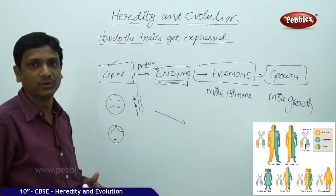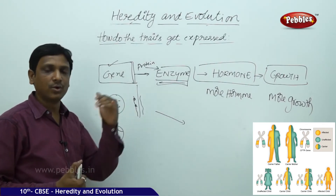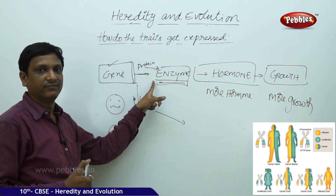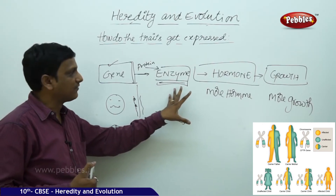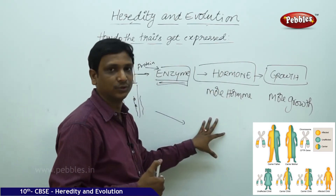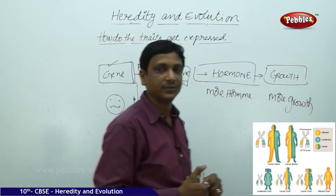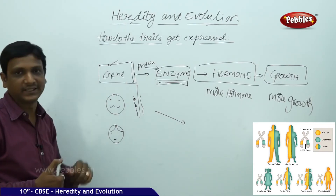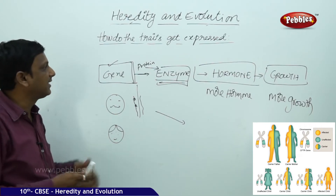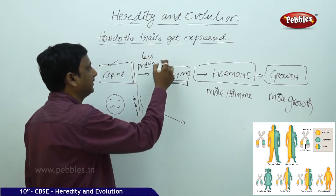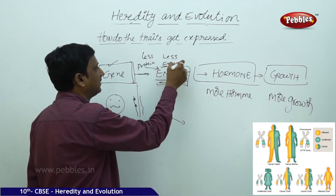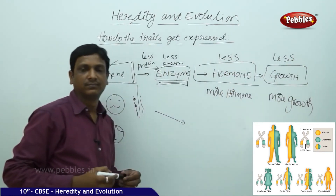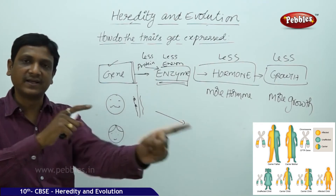Some boys grow to 6 feet, 6.2, or 6.4. Why are some boys growing tall? Because their gene is producing more protein, which turns into more enzyme, which produces more growth hormone in the body, and more growth hormone results in more growth. Conversely, if a boy has a gene that determines short height, that gene makes less protein, less enzyme, less hormone, and therefore less growth. This is how genes are linked to the final execution.